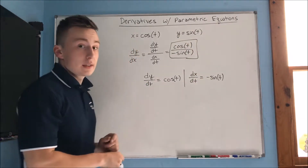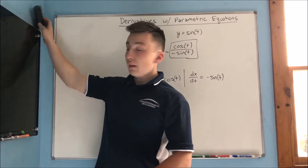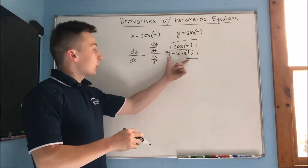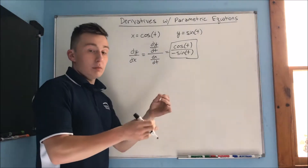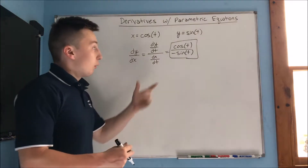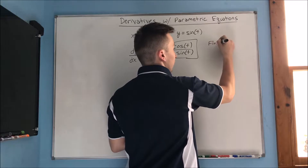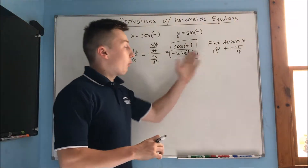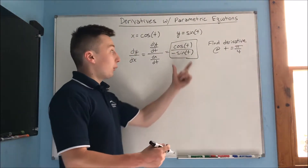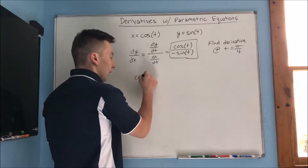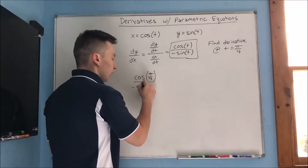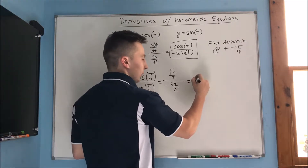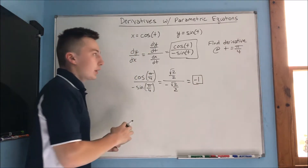So dy/dx equals cos(t) over negative sin(t). Now if we wanted to find the derivative at a specific point, our derivative is in terms of t. For example, find the derivative at t = π/4. We plug π/4 in wherever we see t: cos(π/4) over negative sin(π/4), which is (√2/2) over negative (√2/2), which equals negative 1. That's the slope at t = π/4.